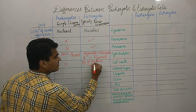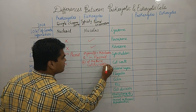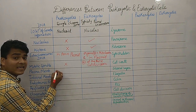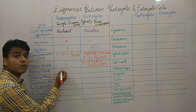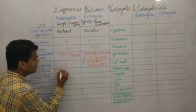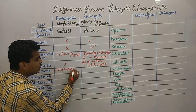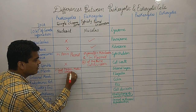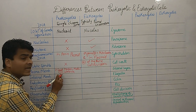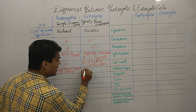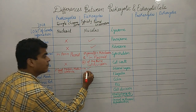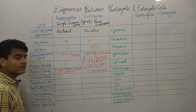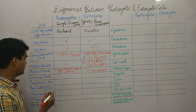Looking at the plasma membrane: in prokaryotes it follows the fluid mosaic model but sterol is absent. In eukaryotes the plasma membrane also follows the fluid mosaic model, but sterol is present. That is an important difference between prokaryote and eukaryotic cells.